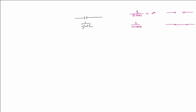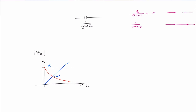The frequency response for the resistor, inductor, and capacitor looks as follows: the resistor has a constant magnitude of impedance equal to R. The inductor's impedance increases linearly as ωL. The capacitor's impedance decreases as 1/(ωC). So on a magnitude vs. frequency plot, the resistor is a flat line (black), the inductor increases (blue), and the capacitor decreases (red).